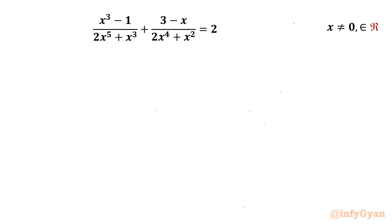Welcome to Infigyan friends. Today in this video we are having one challenging rational equation problem. It is x cubed minus 1 over 2x to the power 5 plus x cubed plus 3 minus x over 2x to the power 4 plus x squared, equal to 2, given x cannot be equal to 0, and we have to find out all real solutions.